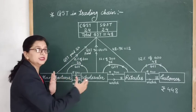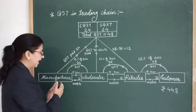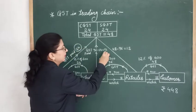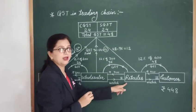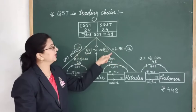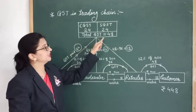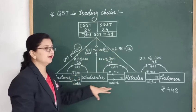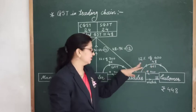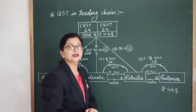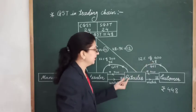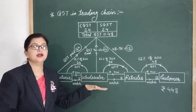The total GST paid to the government: manufacturer paid 24, wholesaler paid 12, retailer paid 12 — together 24 + 12 + 12 = 48 rupees. The customer paid 48 rupees as GST. So in this transaction, the total GST is ultimately paid by the customer, but indirectly. This is called indirect GST. That is how GST is calculated at every stage of trading.